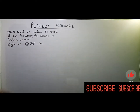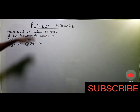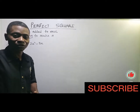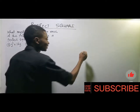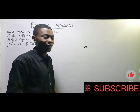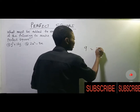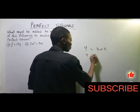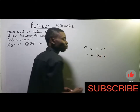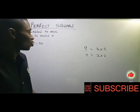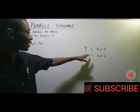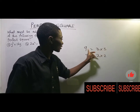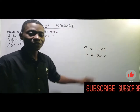When we talk about a perfect square, what are we talking about? A perfect square refers to an algebraic or numeric expression that can be broken down into two equal factors. For instance, nine is a perfect square because three times three gives us nine. Four is also a perfect square because two times two gives us four.